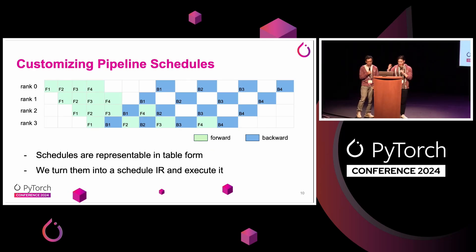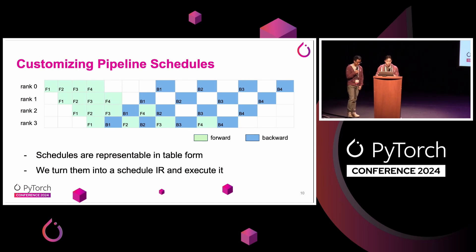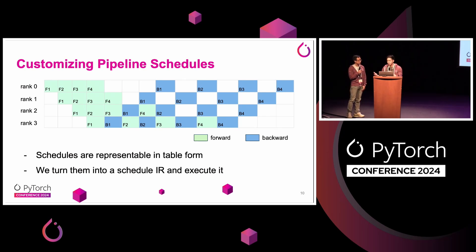It's pretty flexible in terms of creating stages and also pretty flexible in creating schedules. This is a representation of a schedule in table form — each row represents a rank or device, and each column represents a unit of computation. You can see this is a one-forward one-backward schedule, where we have a bunch of forward passes and then interleave the forwards and backwards together. In our library, we turn this into a schedule intermediate representation and have an execution engine process this IR. We welcome the community to also create new schedules and contribute in this area, because there's a lot of state-of-the-art research on how to reduce these white spaces, which is the pipeline bubble.